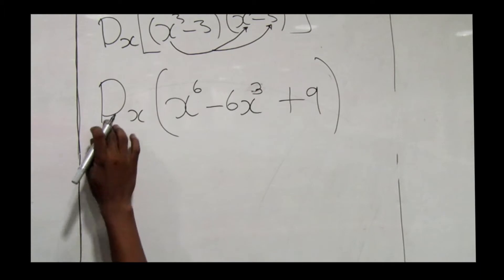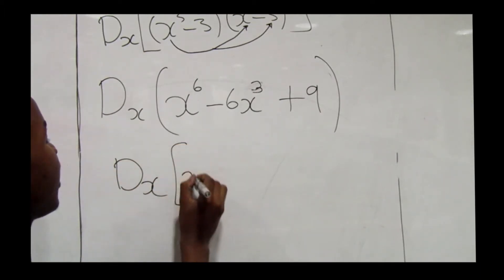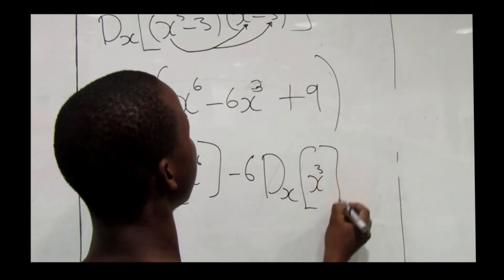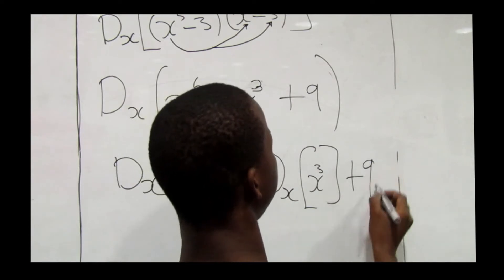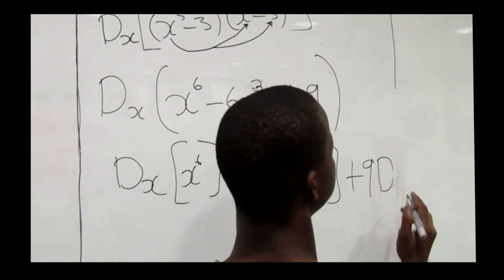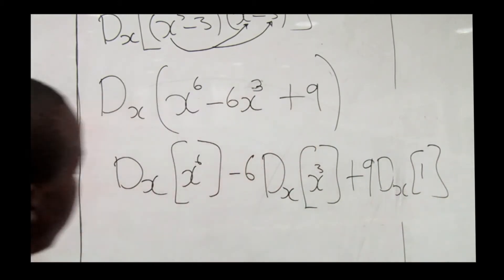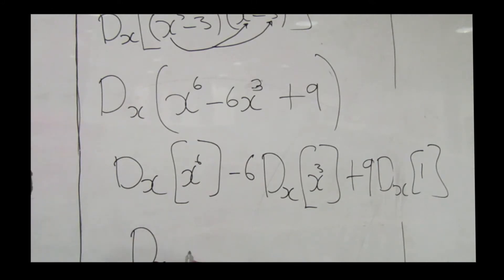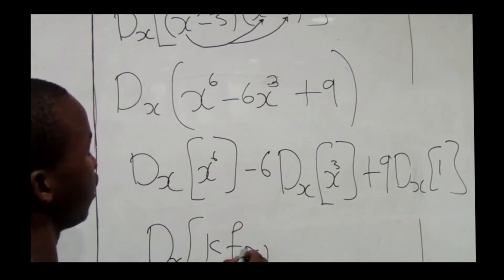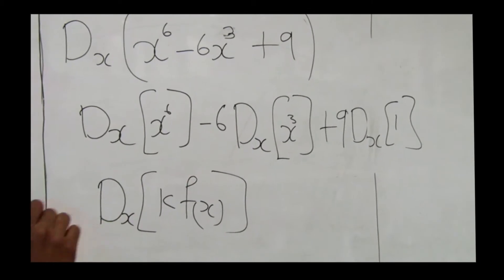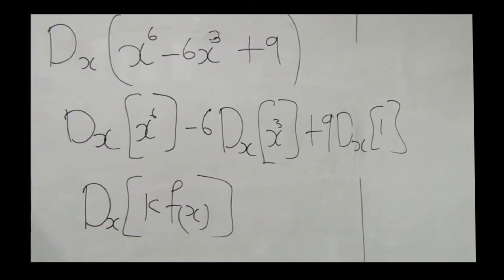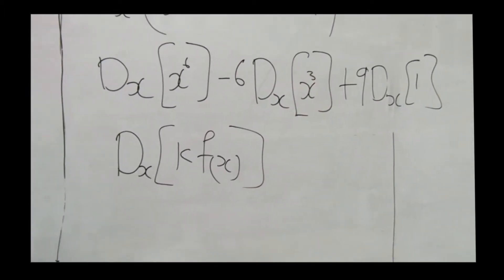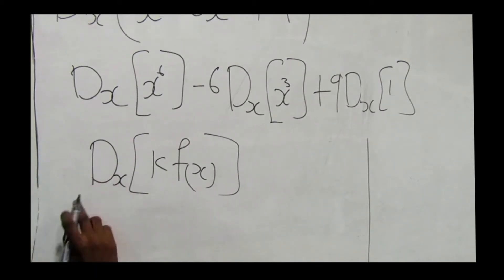Now we distribute the d/dx operator across each term: d/dx of x⁶, minus 6 times d/dx of x³, plus 9 times d/dx of 1. Remember the basic rule: k·f(x), where k is a constant — it can be any number — and f(x) is a function such as x², x³, or x to the power 5.